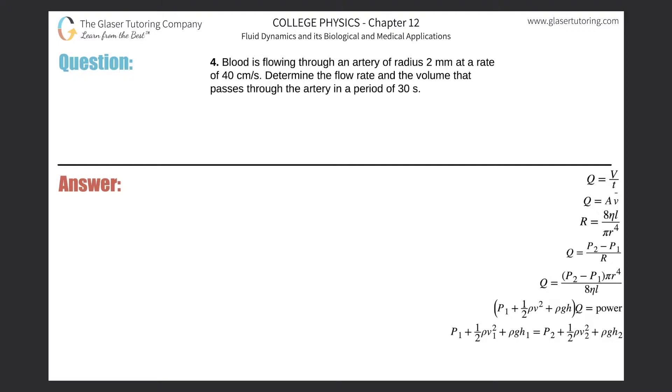Number four: Blood is flowing through an artery of radius 2 millimeters at a rate of 40 centimeters per second. Determine the flow rate and the volume that passes through the artery in a period of 30 seconds.